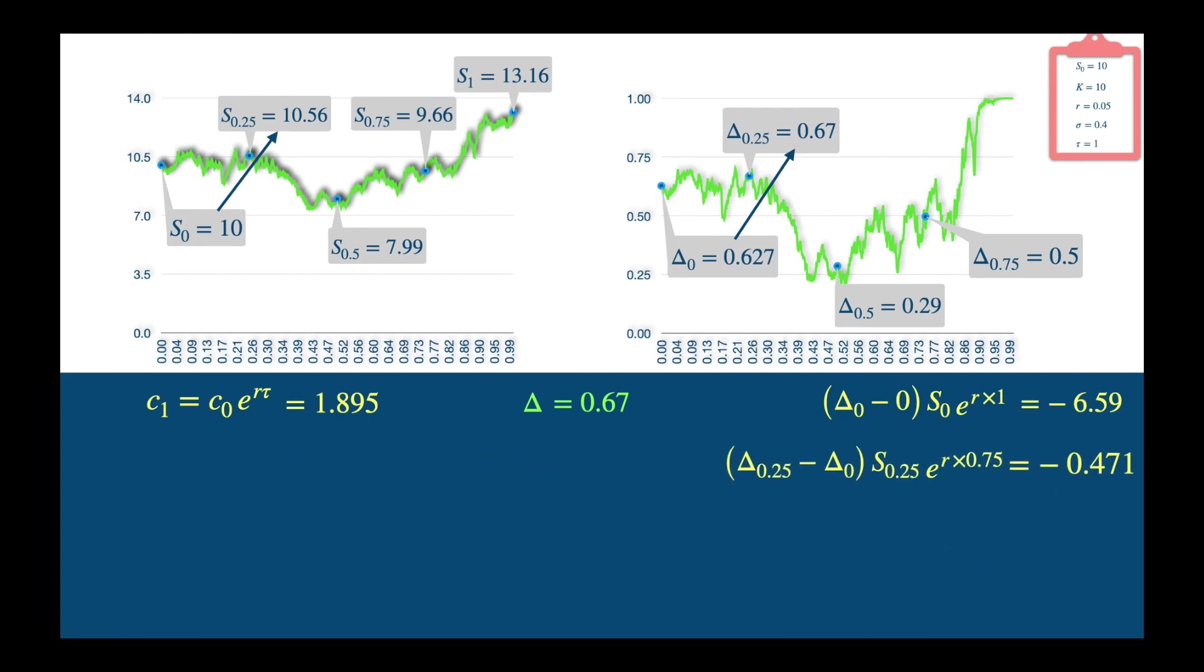We move to the next quarter. The price has gone down, and so has the delta. So we need to change our holding to the new delta, at the then current price. We want to change delta to 0.29 from 0.67, and the price is 7.99. Reducing the stock holding releases cash, which we invest with the bank for the remaining maturity of the option at the risk free rate. And we will be getting this cash at maturity, hence the plus sign. And this comes out to be 3.113. And we are now holding 0.29 units of the stock.